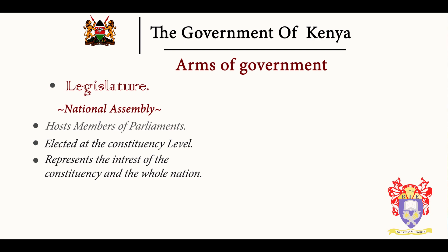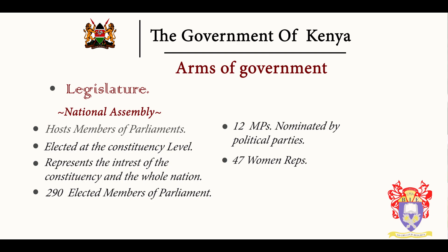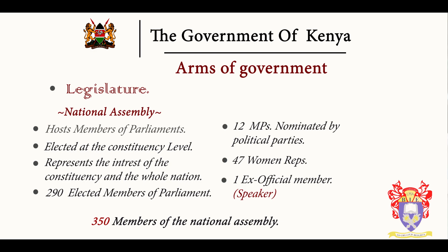We have 290 constituencies in Kenya, meaning the elected members of Parliament are 290. Apart from that, we have 12 members of Parliament nominated by political parties according to their strength in the House. We also have 47 women representatives who are elected at each county, and one ex-officio member who is the Speaker. The total is 350 — these are the total number of members in the National Assembly.